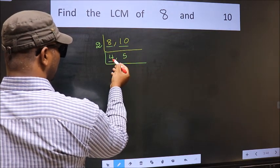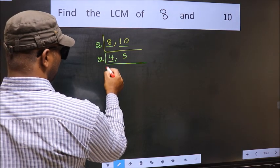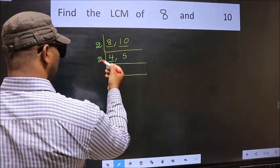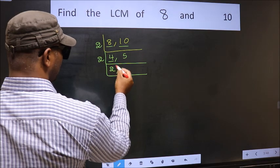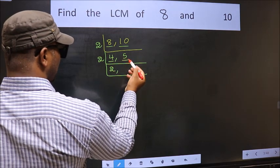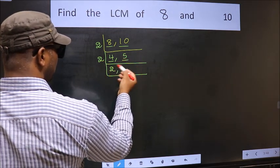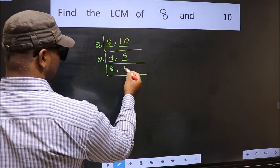Now, here we have 4. 4 is even so take 2. When do we get 4 in the 2 table? 2 times 2 is 4. Now, the other number 5. 5 is not divisible by 2 so we write it down as it is.